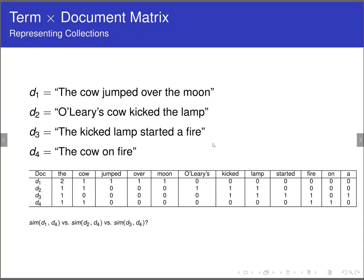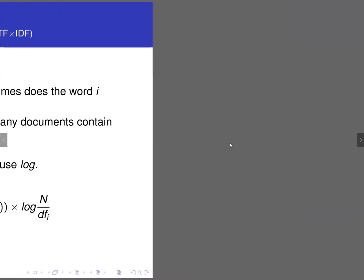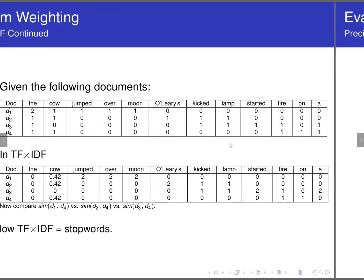You can do document similarity using something called cosine similarity, which is also addressed in a different video. But suffice to say, you can gauge how similar each document is to each other. Now, one thing that comes up is, okay, I can know how documents are similar. But what about knowing which words are related to each other? So for that, I'm going to jump very quickly into a different set of slides here.